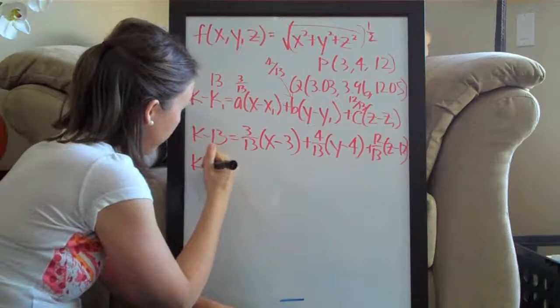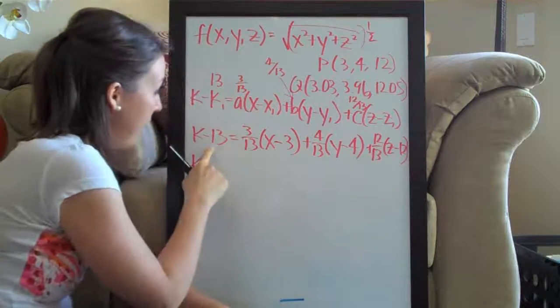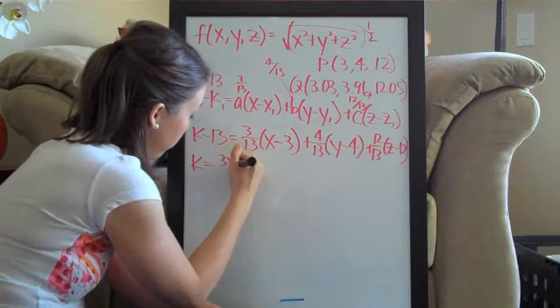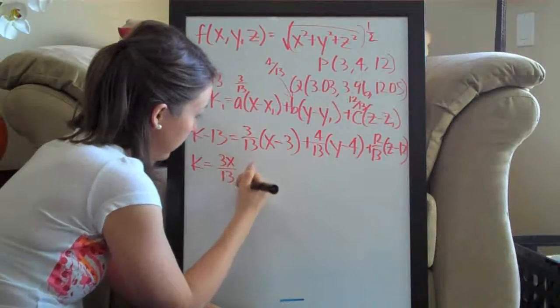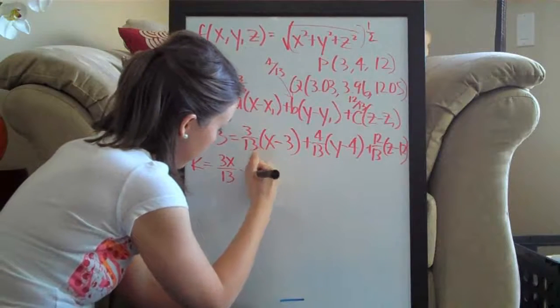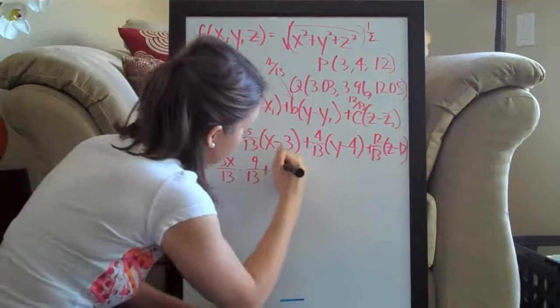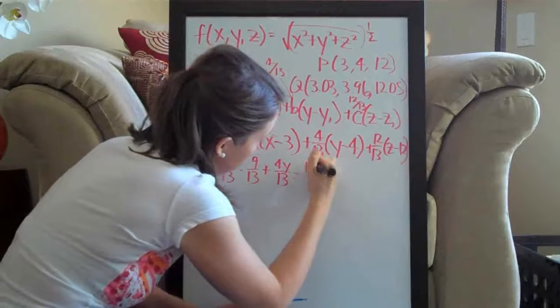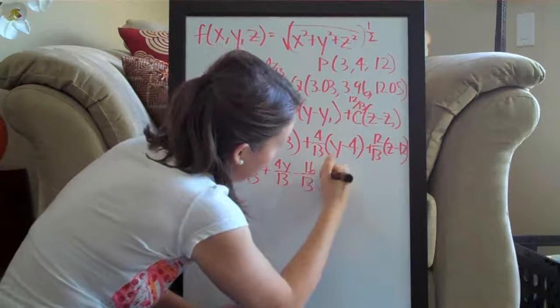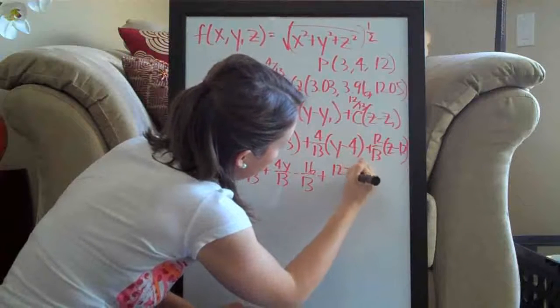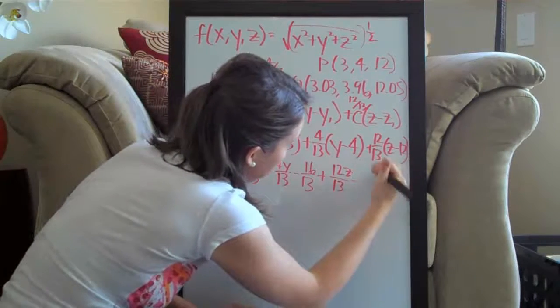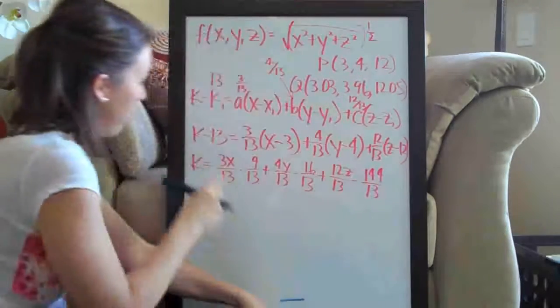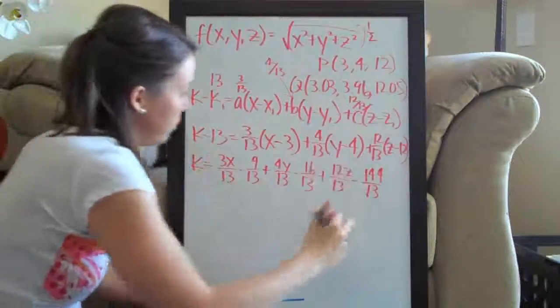So let's say k, we're going to go ahead and add thirteen to this side. So I'm going to say k equals three x over thirteen minus nine over thirteen plus four y over thirteen minus sixteen over thirteen plus twelve z over thirteen minus one forty-four over thirteen. And then remember we're adding thirteen to both sides.